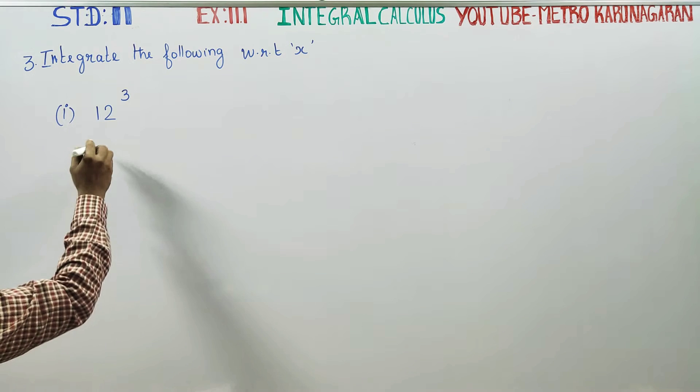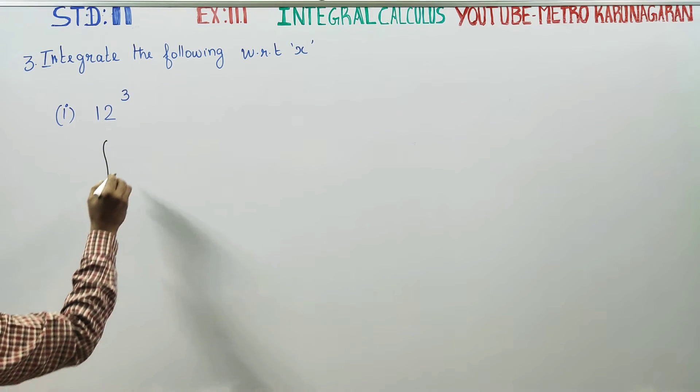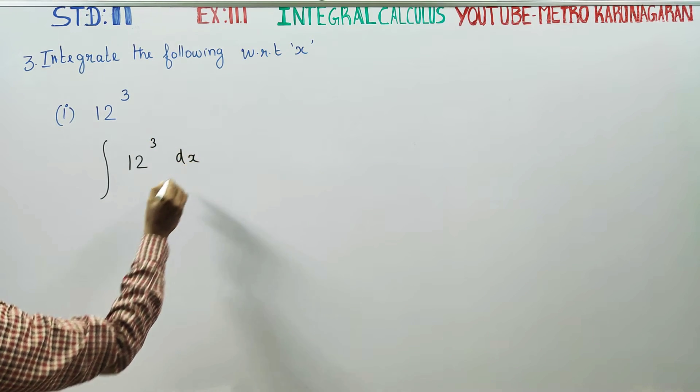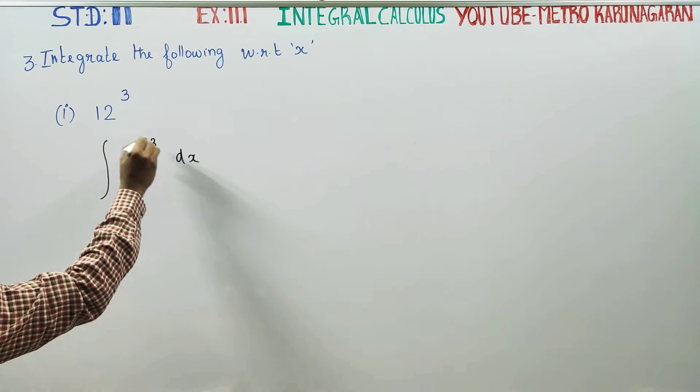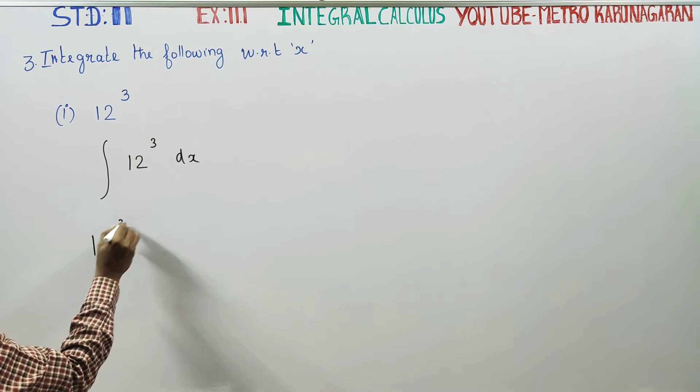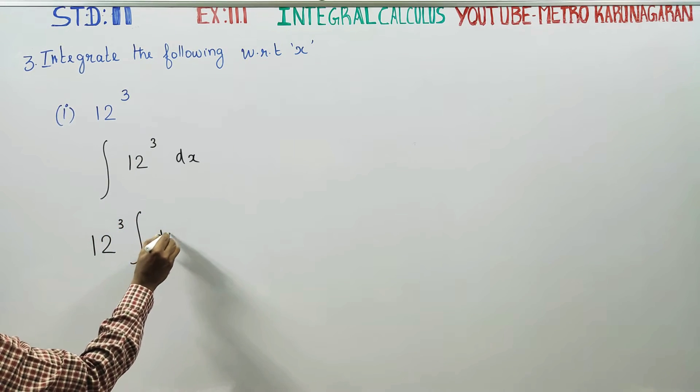For this, I am going to write the simple integration 12 cube with respect to x. This is my constant. If you have a constant, you can write the integration of x. 12 power 3, write the integration of dx.